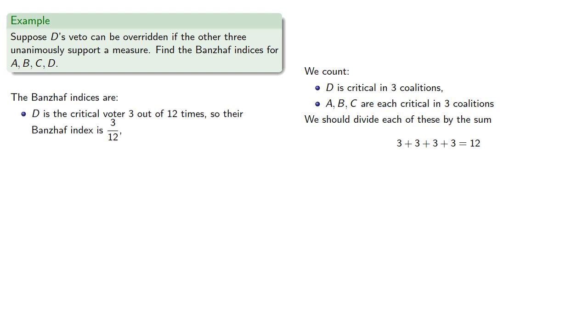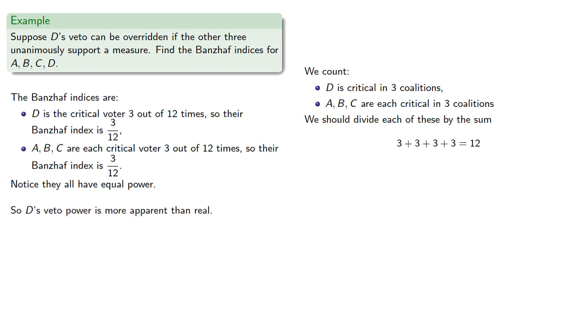So we can calculate the Banzhaf indices. D is the critical voter 3 out of 12 times, so their Banzhaf index is 3/12. A, B, and C are each critical voters 3 out of 12 times, so their Banzhaf indices are 3/12. And notice they all have equal power, so even though D has veto power, D's veto power is more apparent than real.